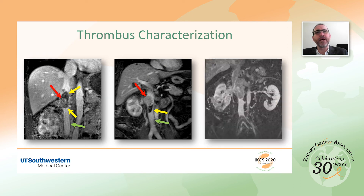This third patient had a level 3 enhancing thrombus with the IVC widely patent at that level. However, the most inferior IVC and the iliac veins were completely occluded by non-enhancing bland thrombus. This information needs to be clearly detailed in the report so that the treating physician can decide on the need for anticoagulation.